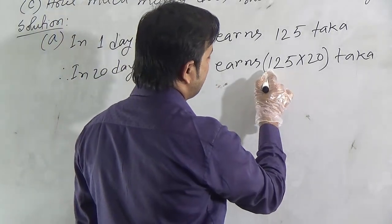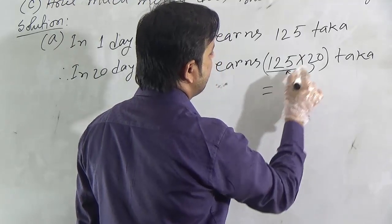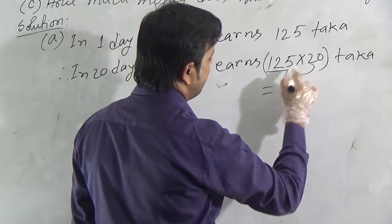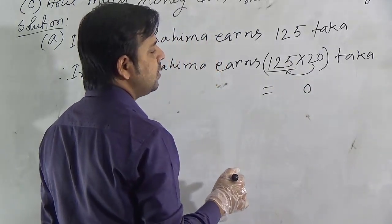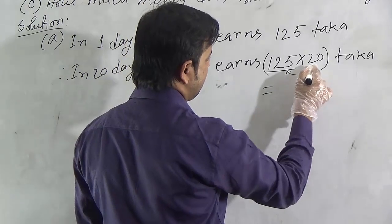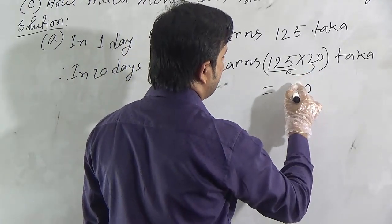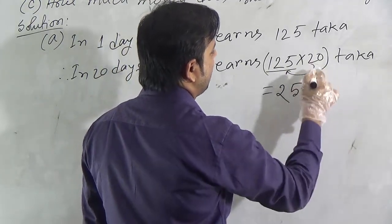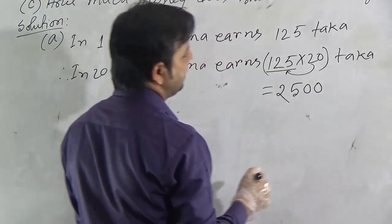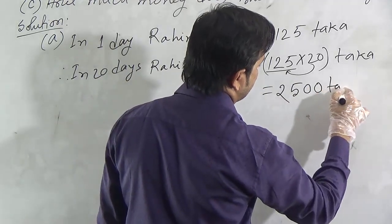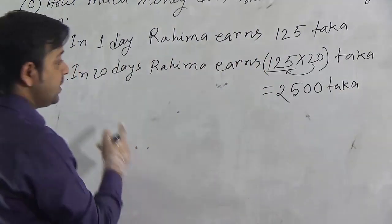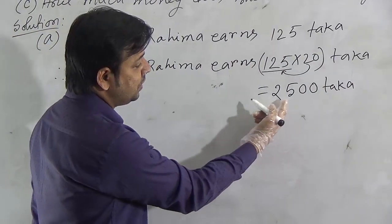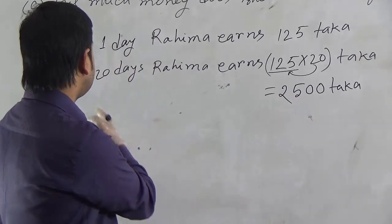This is a simple multiplication. We can do this easily. Just we multiply 125 by 2, then we will put a 0. Now, multiply 5 by 2. 5 twos are 10, so we can write a 0 here. 1 left. 2 twos are 4 and 1 is 5. Now, 2 ones are 2. And here is a 0, so give us a 0 here. So, we can say, Rohima earns 2500 Taka in 20 days.